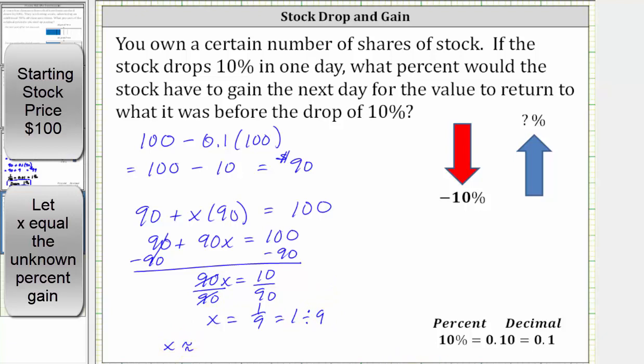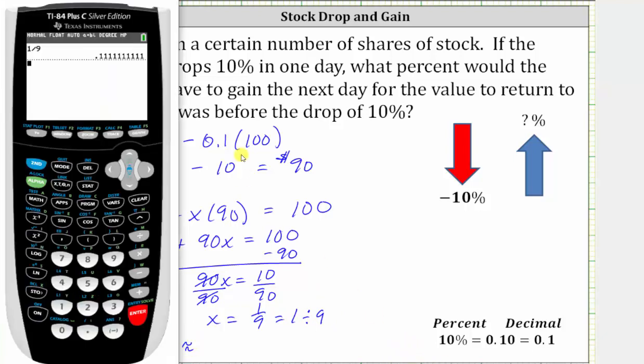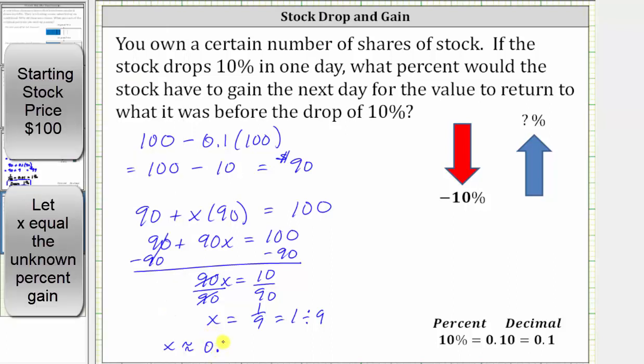Going to the calculator, one divided by nine is equal to 0.1 repeating. If we want the percent rounded to one decimal place, we'll have to round the decimal to three decimal places. So we'll say x is approximately 0.111, and 0.111 as a percentage is equal to 11.1%.